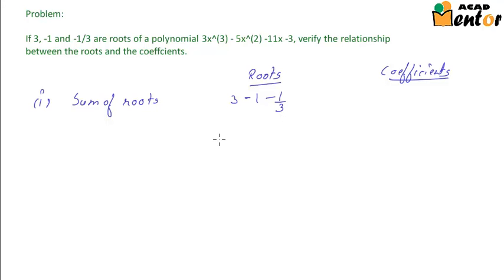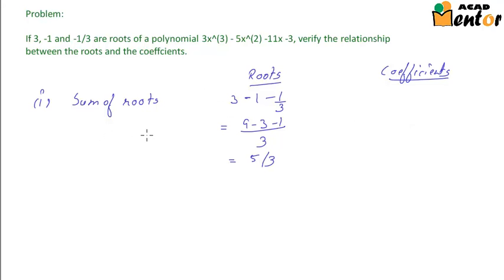When we add all of these up it becomes 9 minus 3 minus 1, which is 5/3. Now using coefficients, the relationship for the sum of roots is minus the coefficient of x² divided by the coefficient of x³, so this becomes minus of minus 5 divided by 3, which is 5/3.